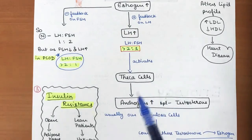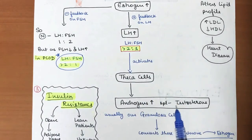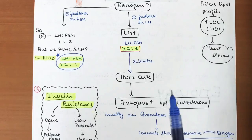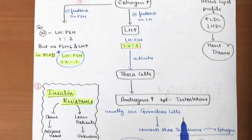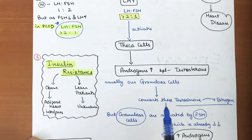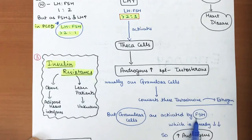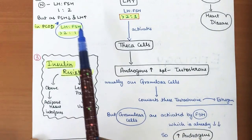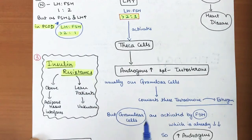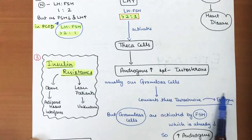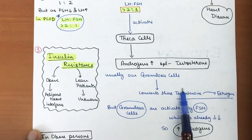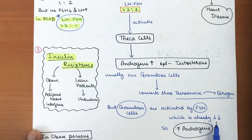The elevated LH activates the theca cells in the ovaries, which produce more androgens — specifically testosterone. Normally, granulosa cells convert testosterone into estrogen, but granulosa cells are activated by FSH, which is decreased in PCOD. Therefore, the granulosa cells cannot properly convert testosterone into estrogen, ultimately leading to increased testosterone.